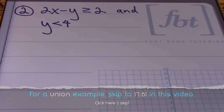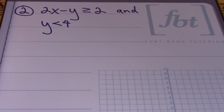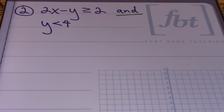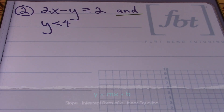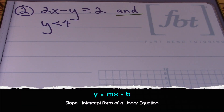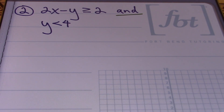In problem number two, we have 2x minus y is greater than or equal to two, and y is less than four. Once again we have an intersection because of the word 'and.' I'm going to start by putting the first inequality in slope-intercept form. You can use any other method you prefer and we can compare graphs.